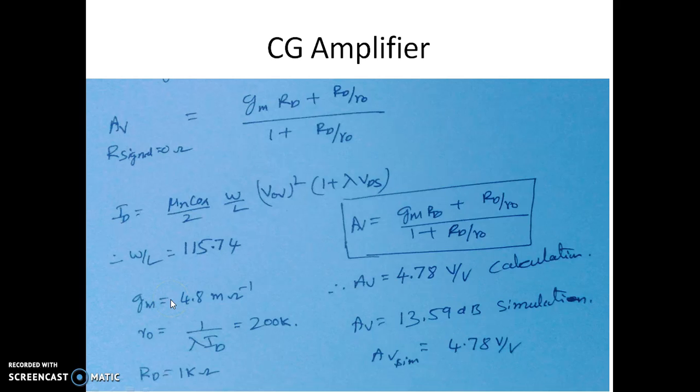And we know the expression for gm which is given by square root of 2id mu and cox into W/L. Substituting those values we will get the gm as 4.8 milli ohm inverse. We will also find the value of R0 which is 1 over lambda into id which comes out to be 200 kilo ohms.